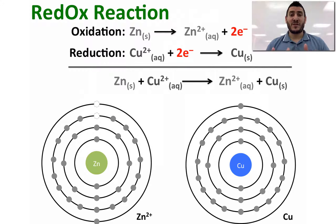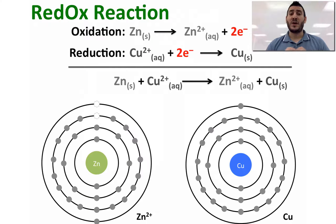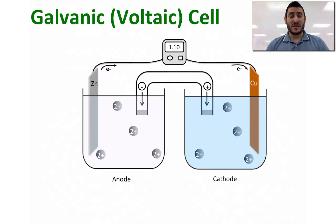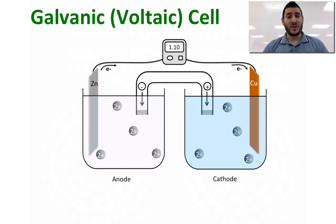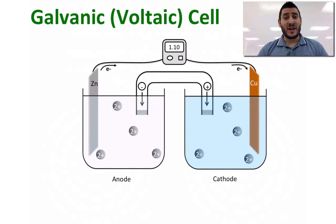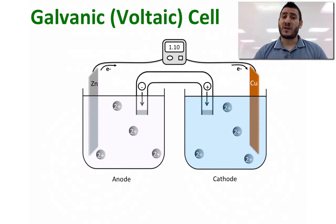The transfer of electrons between zinc and copper can be used in a battery to generate electricity. Instead of having this transfer happening in one solution, we can split the reactants into two solutions, as represented in the following galvanic cell, or what is sometimes called a voltaic cell.